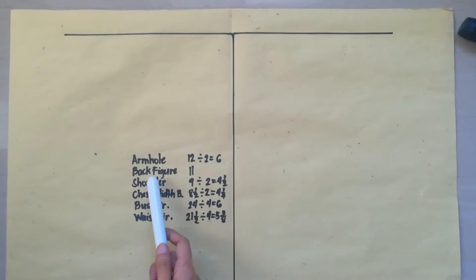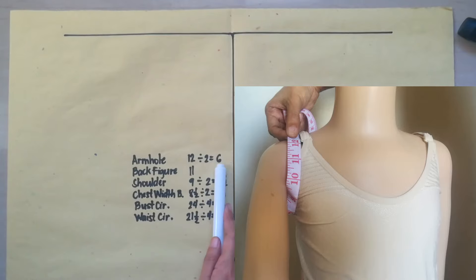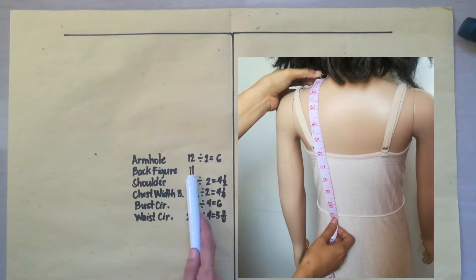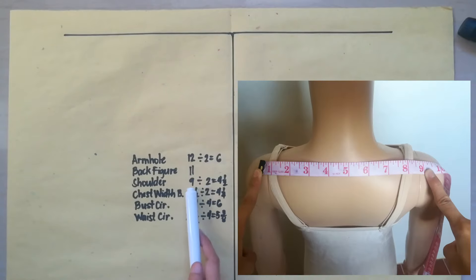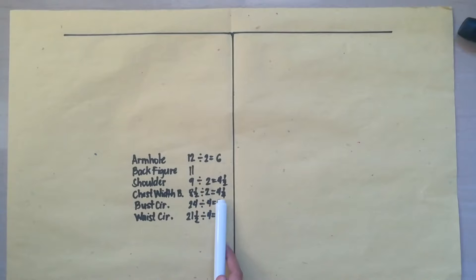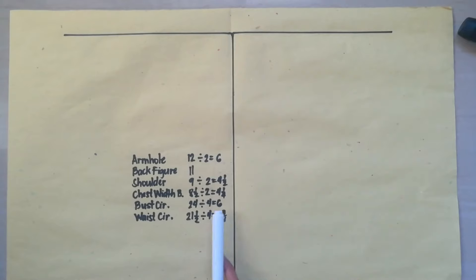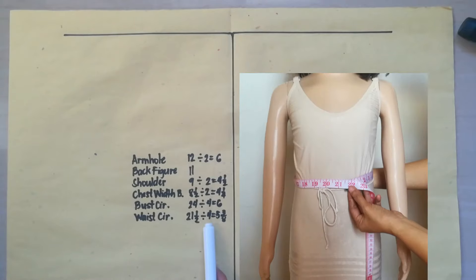Here are the measurements needed according to the sequence in the procedure. Armhole, it is divided by 2. So, in my example, it is 12, so it is 6 inches. Back figure, 11 inches. Shoulder divided by 2. Example is 9 inches, so it is 4 and 1 half. Chest width back is divided into 2, so the measurement example is 8 and 1 half, so it is 4 and 1 fourth. Bass circumference is divided into 4. And for example, it is 24 inches, so it would be 6 inches. Waist circumference is divided by 4. So, 21 and 1 half is 5 and 3 eighths.